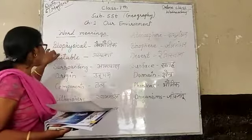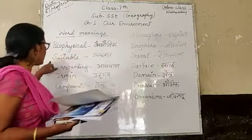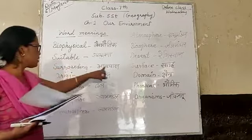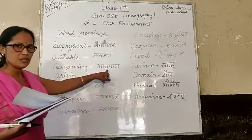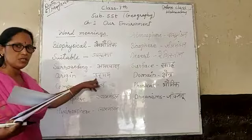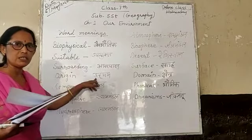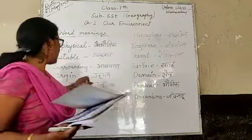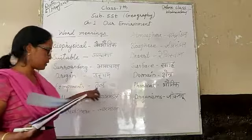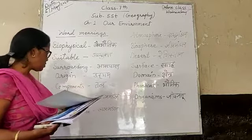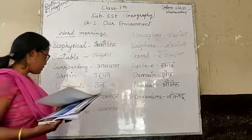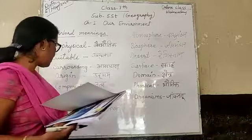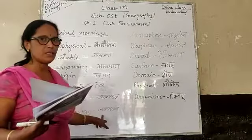First of all: Physical — suitable, beautiful. Surrounding — aas-paas. Origins — Udgam, jahaan se kisi cheez ka shuruat hota hai. Components — Thut. Lithosphere — Sthal Mandal, jis se zameen par hum log rehte hain. Hydrosphere — Jal Mandal.